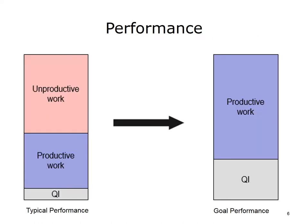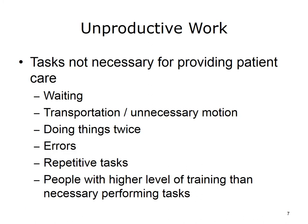If we say that unproductive work is the problem, then redesign strategies are the potential solutions. Redesign strategies are applied to fix process problems. There are some natural matches between problems and strategies to fix them. The key to process redesign is identifying process problems — unproductive work — and applying the right redesign strategy. In a clinic, unproductive work is effort that does not contribute to patient care, i.e., tasks not necessary for providing patient care. Unproductive work includes waiting, transportation and unnecessary motion, doing things twice, errors, repetitive tasks performed by humans, and people with a higher level of training than necessary performing tasks. Unproductive work can be identified during knowledge acquisition, process analysis, or during redesign.